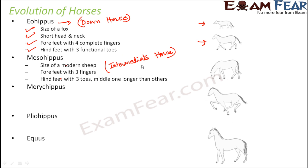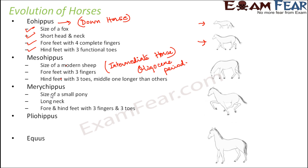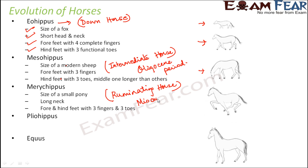Thereafter came Merichippus, which was found during the Oligocene period. Merichippus was slightly bigger than Mezohippus, of the size of a small pony, and had a long neck — showing that the size of the neck also increased with time. It had fore and hindfeet with three fingers and three toes. Merichippus was known as the ruminating horse and was found in the Miocene period.